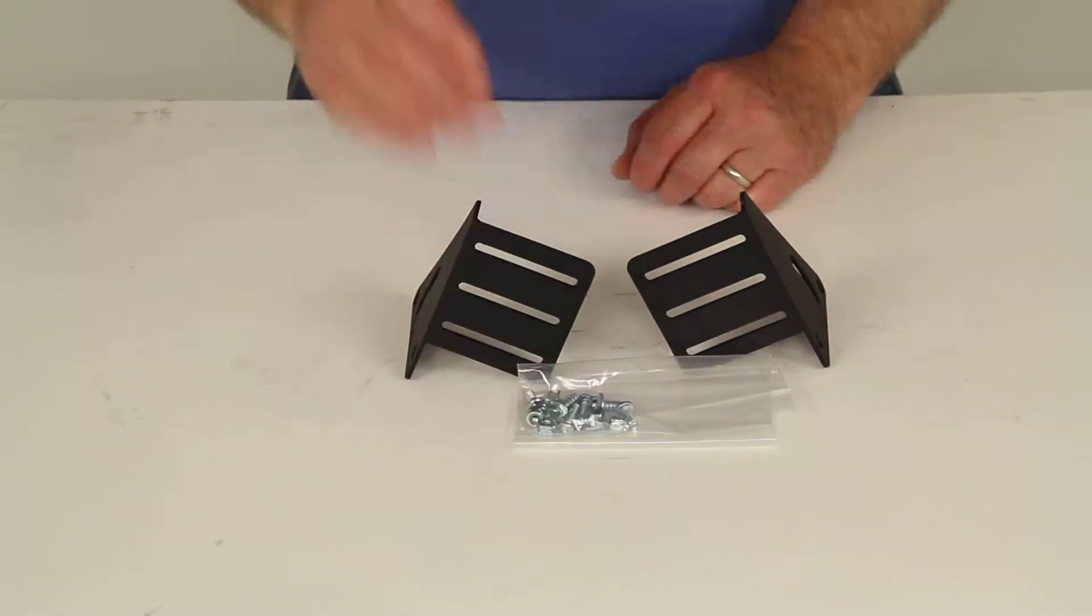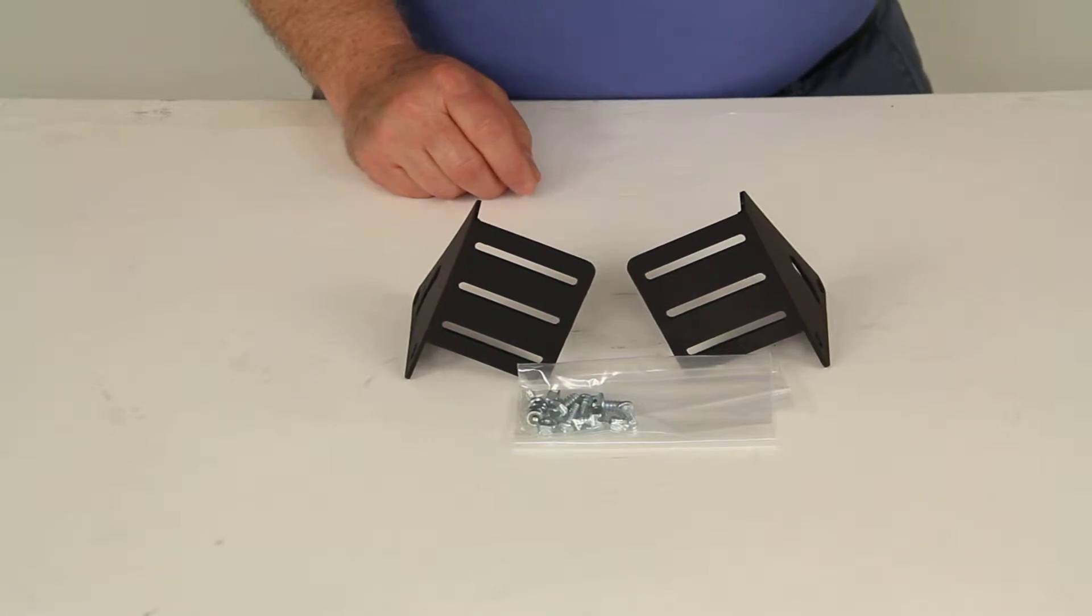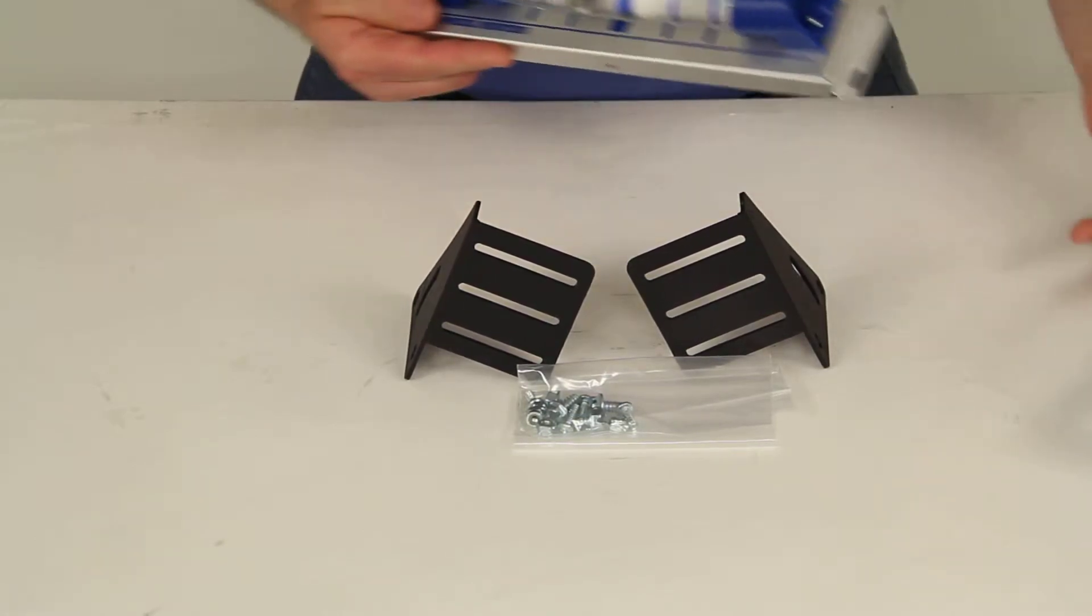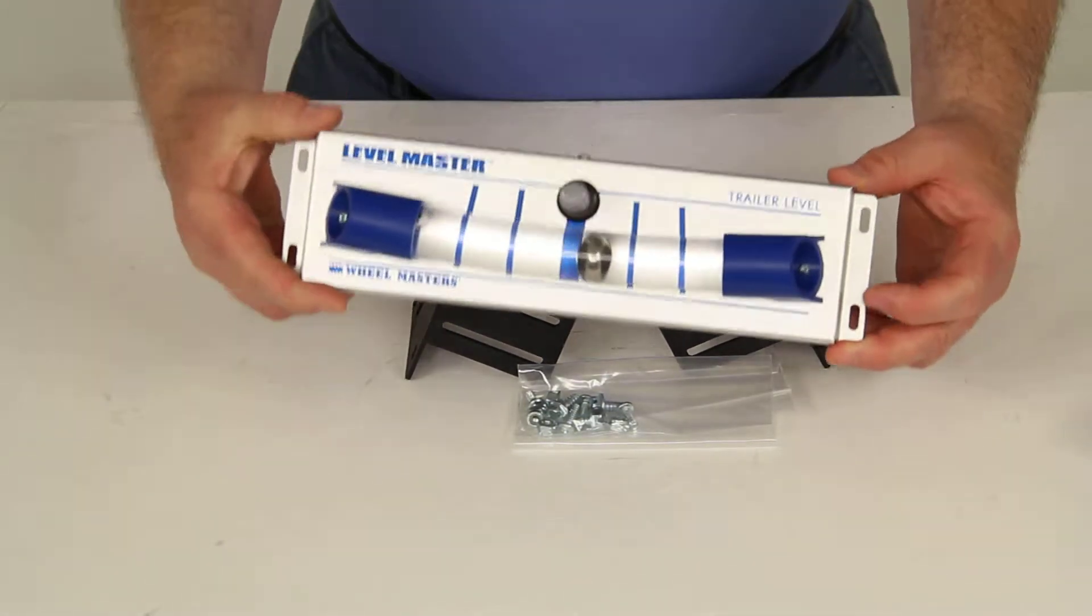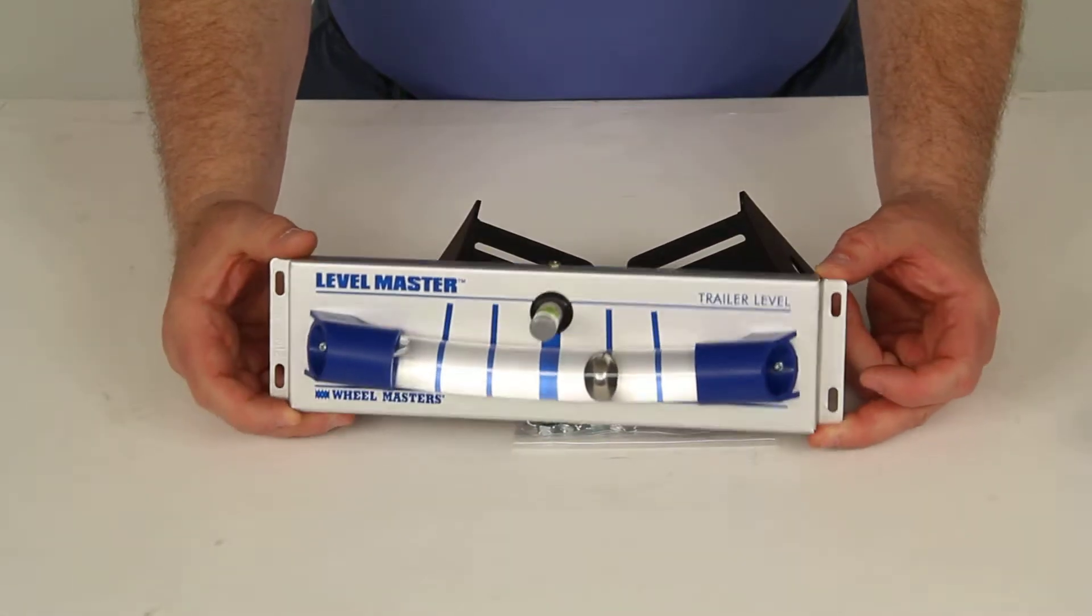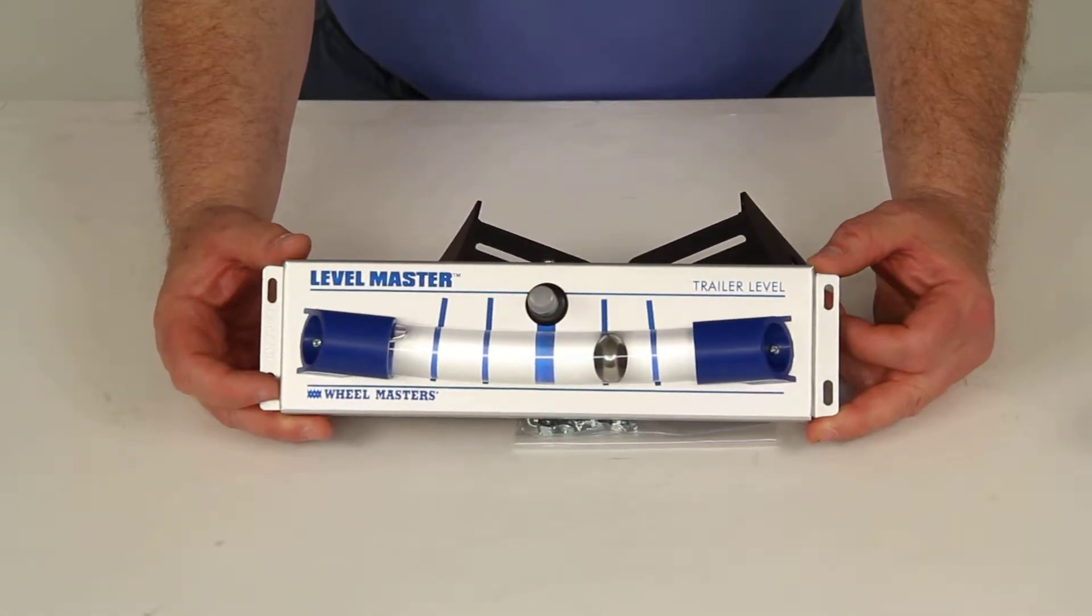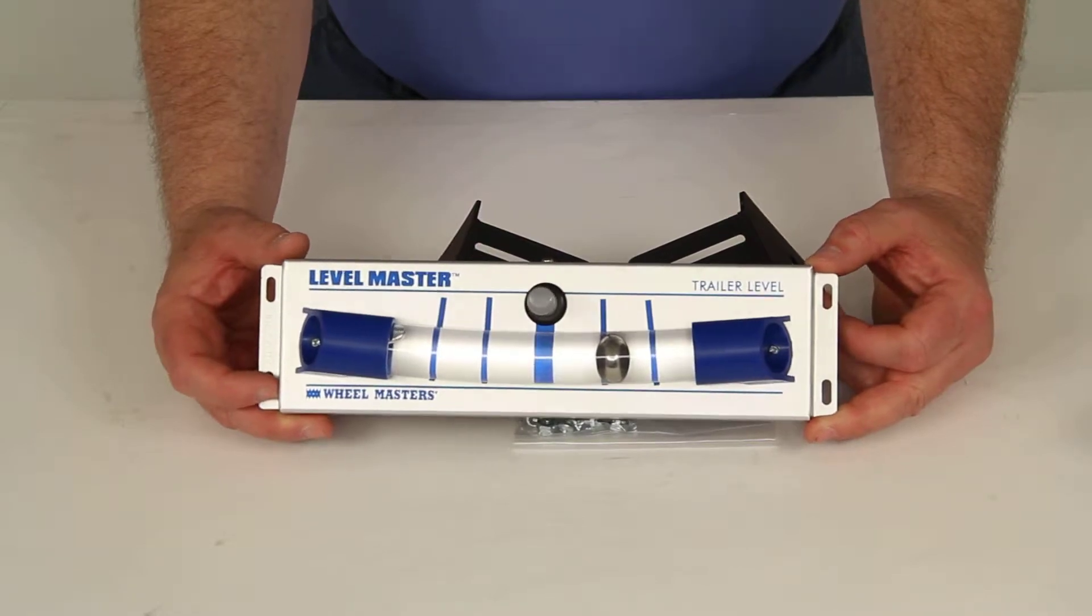This does come with the mounting hardware, and basically this would allow you to mount the Wheelmasters Levelmaster Trailer Bubble Level, which is sold separately. It is part number WM6700.